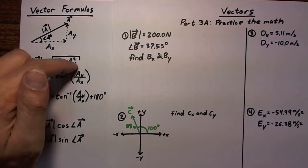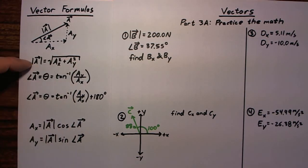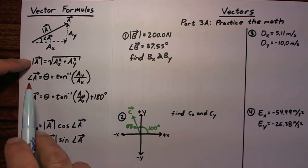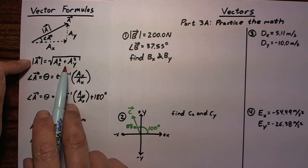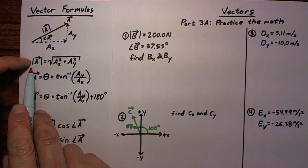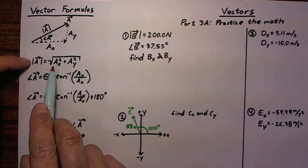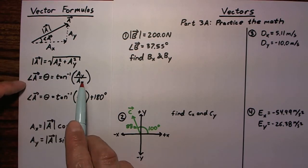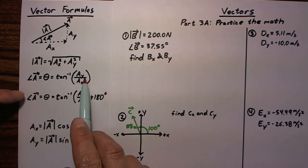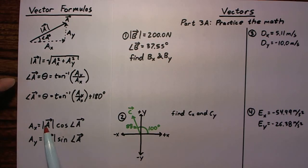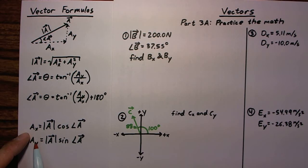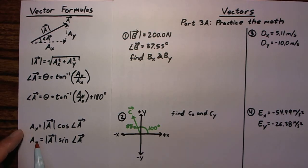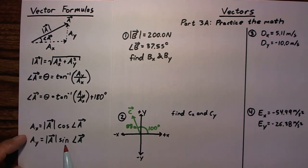Let's look through our list of formulas — which one has magnitude and direction on one side and components on the other side? This formula has components and a magnitude, but we don't know the components, so if we tried to use it we'd have two unknowns. Similarly, either of those other formulas gives us two unknowns and only one known. So that pushes us down to the bottom two formulas with the cosine and sine.